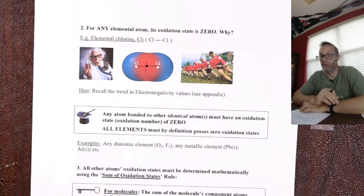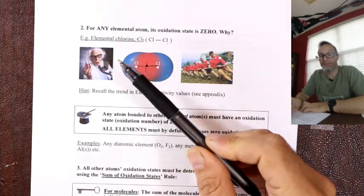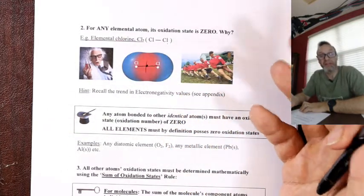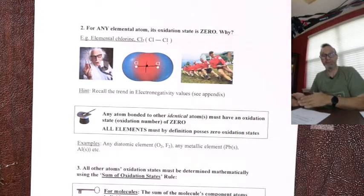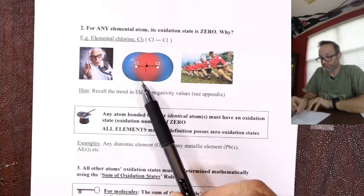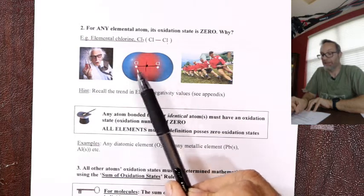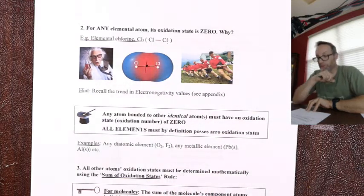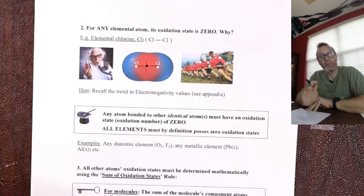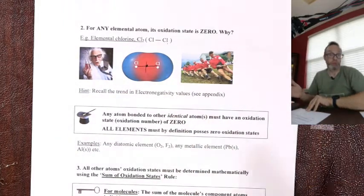That's the definition of a pure covalent bond — a perfectly shared pair of electrons. For any element, no one wins, no one loses, so you stay at zero. If you win, you become minus. If you lose, you become plus. But if you have a tie, you're zero. So oxidation states of elements are zero — it doesn't matter if it's a metal or a molecule, if it's the same atom stuck together: zero.